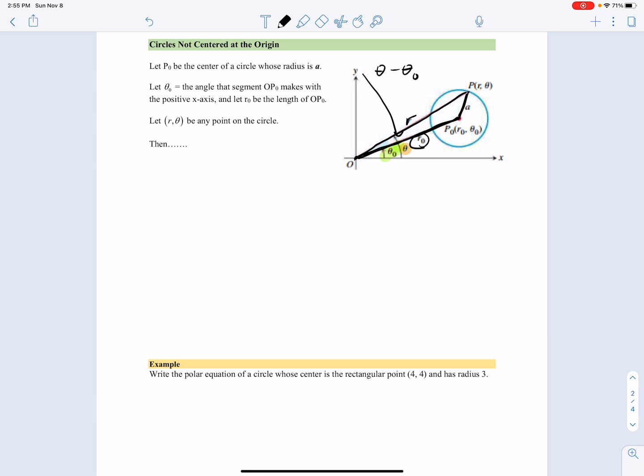Law of cosines says that the angle that we take the cosine of, the side opposite that angle is on the other side of the equation. So that would be a. So we have a squared equals the sum of the other squares minus two r times r zero cosine of the angle.